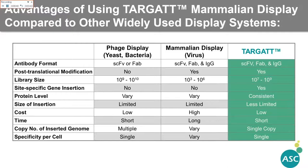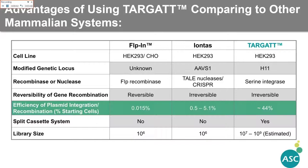The advantage of using target compared to other mammalian systems is that the target has a knock-in efficiency that is about two to three orders of magnitude higher than other systems. This irreversible recombination also enables stable integration, providing the foundation for a very high efficiency mammalian cell screening platform to build large antibody libraries.